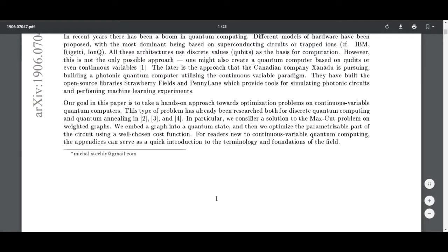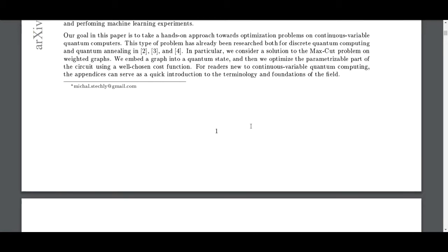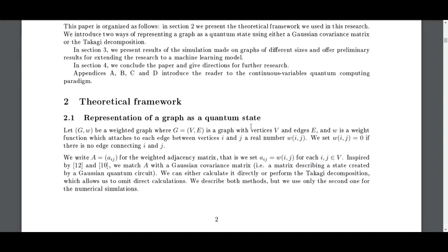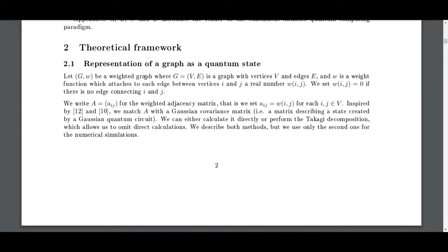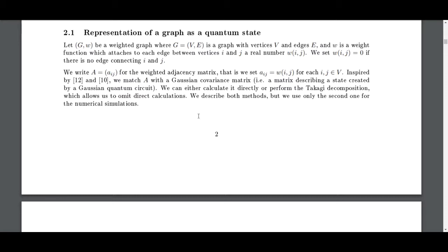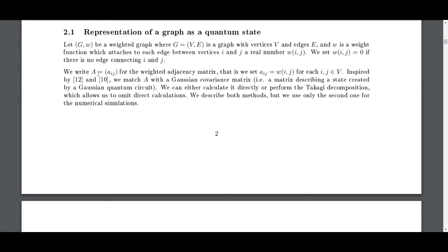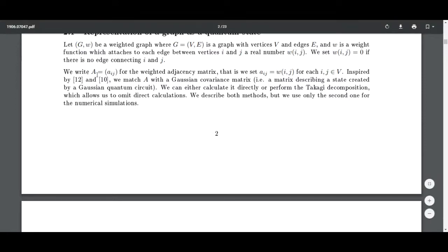The paper's approach to optimization problems in the quantum realm has already been researched both for discrete and quantum annealing. In particular, we can see the solution to the max cut problem on weighted graphs. We embed a graph into quantum state and then optimize the parameterizable part of the circuit. Related work, theoretical framework, representation of a graph as a quantum state - that's probably going to be critical to understand. Let G be a weighted graph with vertices and edges, and then the weights. Each edge between vertices i and j has a real number, we set zero if there is no edge connecting. We write A for the weighted adjacency matrix.